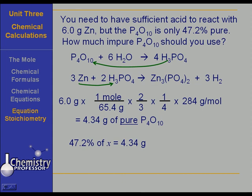So the expression then is 0.472X equals 4.34 grams. Solving, we find that X is 9.2 grams of our impure P4O10.